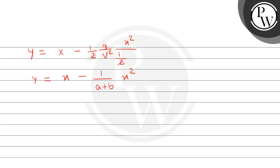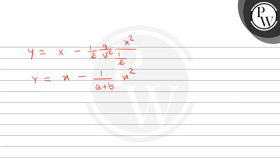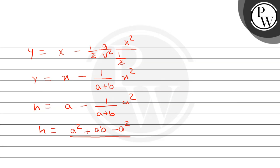अब H distance पे height कितनी होगी? जैसे हम देख सकते हैं ball wall को cross कर रहा है तो इसकी height H है. y की location होगी H और x की location होगी A. तो coordinate लिख सकते हैं (A, H). जब इस coordinate को equation of trajectory में place करेंगे: H = A minus A²/(A+B), जो solve करने पर H = (A² + AB - A²)/(A+B) = AB/(A+B) आता है.